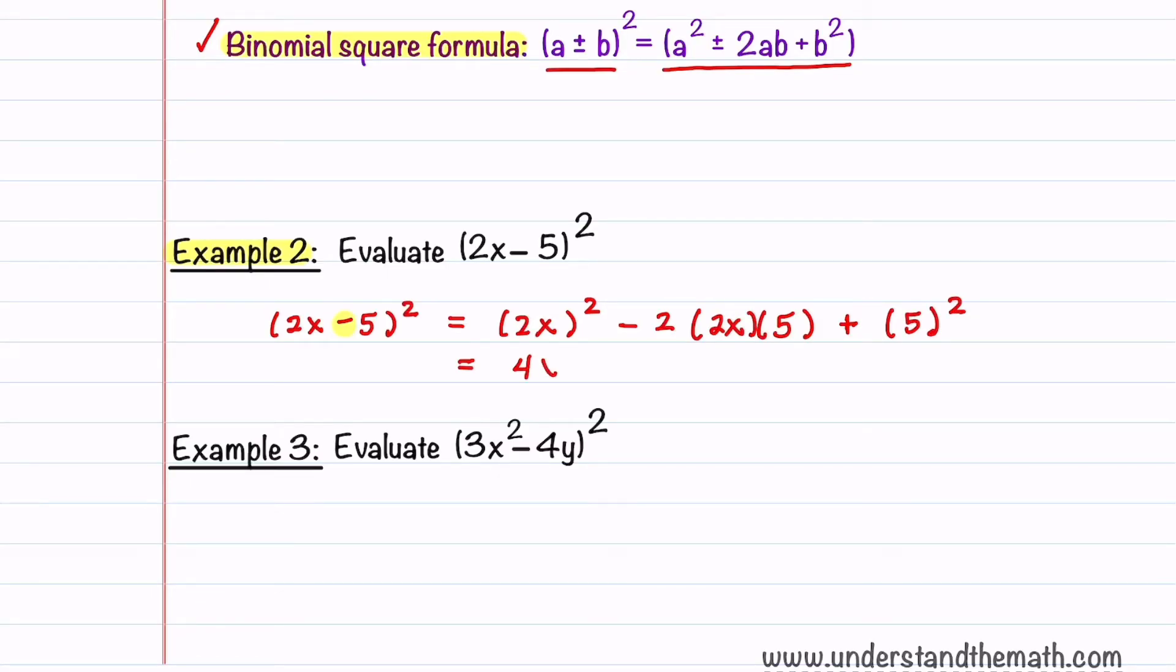This gives us 4x² minus 2 times 2 times 5, which is 20. So minus 20x plus 25.